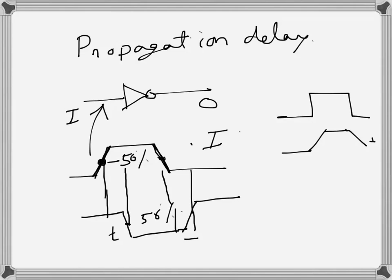The propagation delay is denoted tP, but it has two types: tPHL and tPLH. tPHL means when the output is changing from high to low, what is the delay.